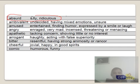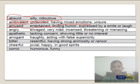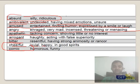Let's look at each of these important tones. Absurd is obviously silly, ridiculous. Ambivalent is undecided — a person with mixed opinion. For example, if an author talking about a war gives some positive views and some negative views, he is ambivalent. Amused means entertained, finding humor — a tongue-in-cheek kind of thing. Angry means enraged, very mad, very threatening. Apathetic is lack of concern, showing no interest. Arrogant is obviously arrogant. Bitter means resentful. Cheerful means jovial, happy. Comic is humorous. Cheerful and comic are very close words, so look carefully at the real meaning.